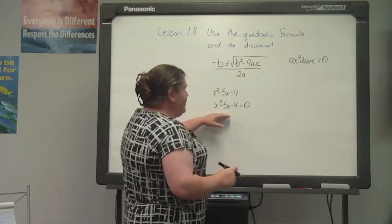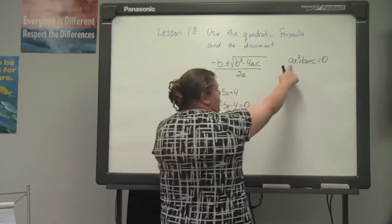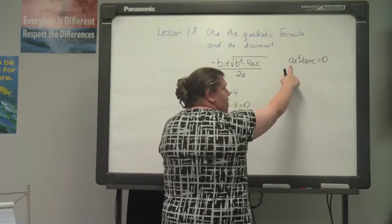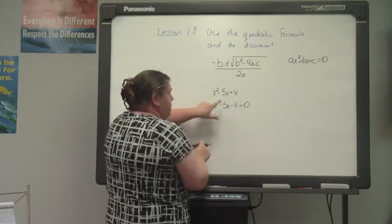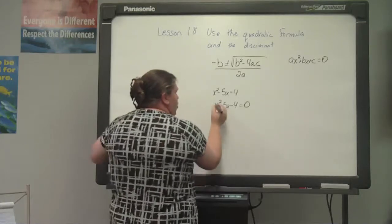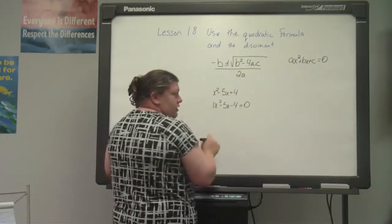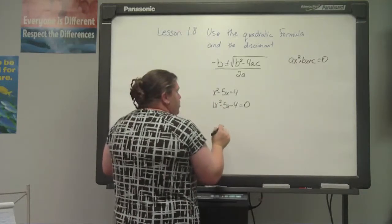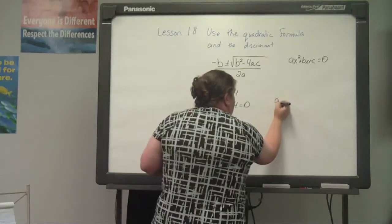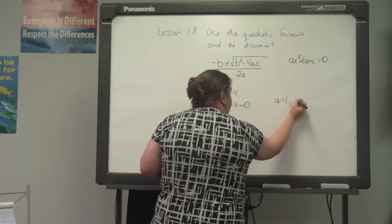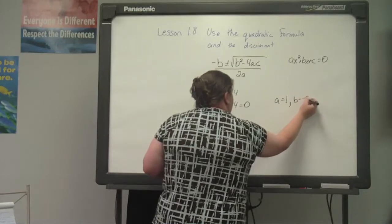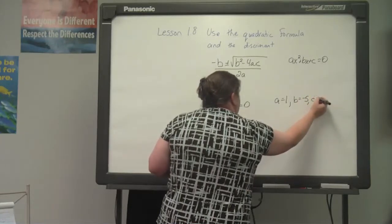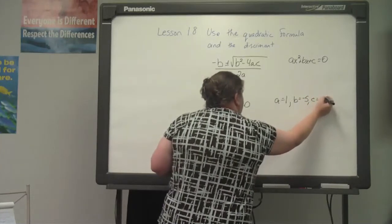Now that it is in standard form, we can see that it matches ax squared plus bx plus c. My x squared means an understood 1 times x squared, so I can say that my a is 1, my b is negative 5, and my c is negative 4.